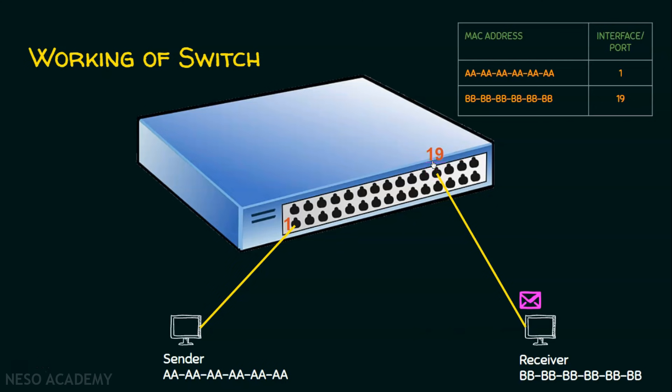It doesn't mean that a switch cannot do multicasting or broadcasting. A switch can do unicasting, multicasting, and broadcasting based on the need. But a hub always does broadcasting. So far we have seen the working of a switch. We will now see how to create a local area network using Cisco Packet Tracer.